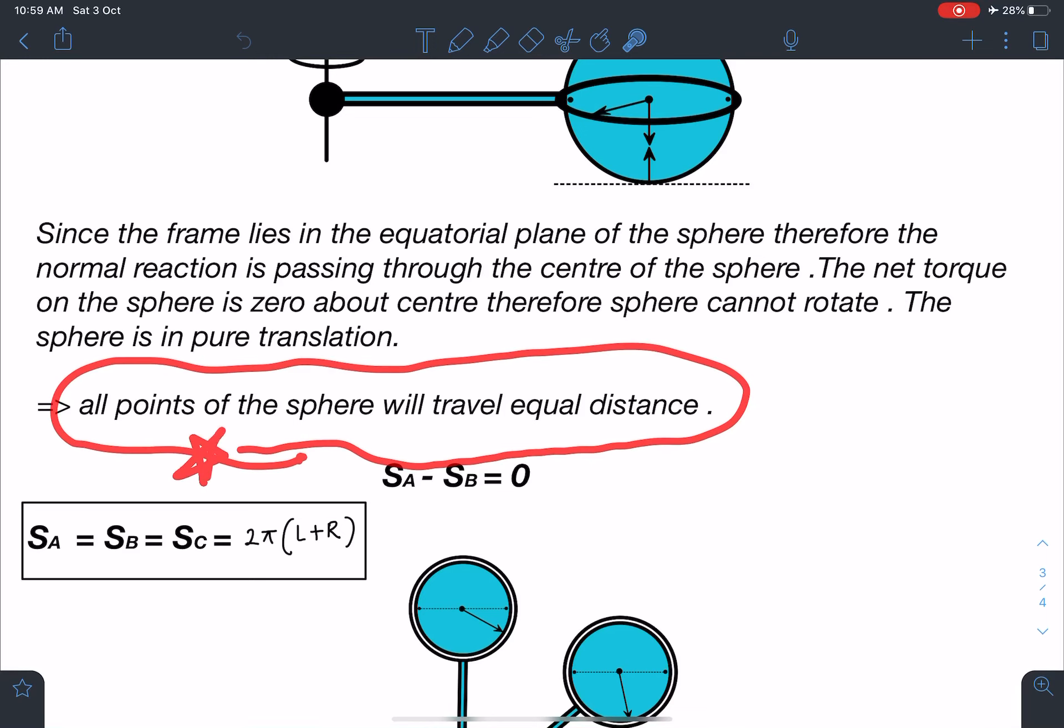So now we have reached the conclusion here. All the points on the sphere will travel equal distance because it is not going to rotate. It is placed on a smooth surface and rest of the forces are passing through center of mass so SA minus SB is going to be zero.